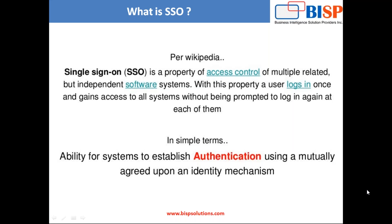Basically, with this property a user can log in once and gain access to all software systems without being prompted to log in again at each of them. In simple terms, it's an ability for a system to establish authentication using a mutually agreed-upon identity mechanism. We need to set up an identity mechanism that will communicate between two applications or software systems which are independent of each other.